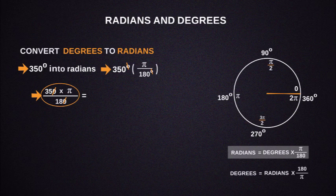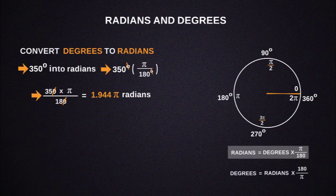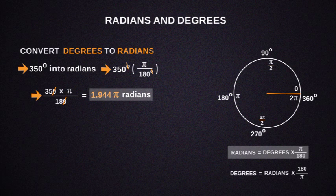Then we get radians equals 35 times pi by 18. After that, divide 35 by 18, we get 1.944. Then finally, radians equals 1.944 pi.